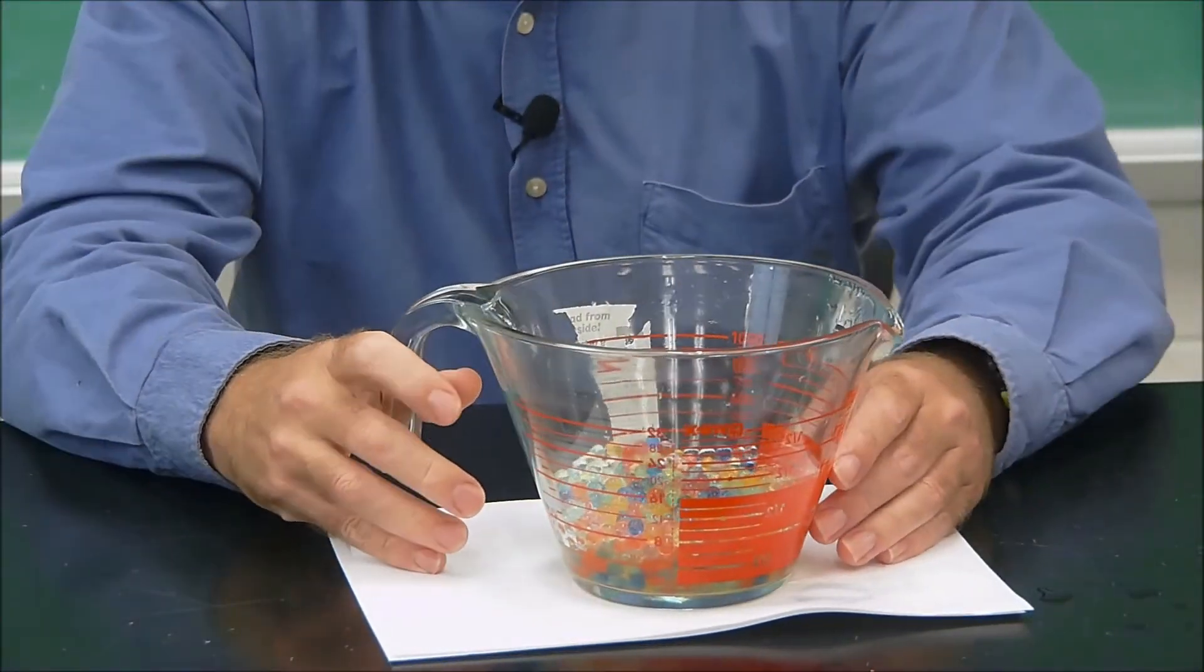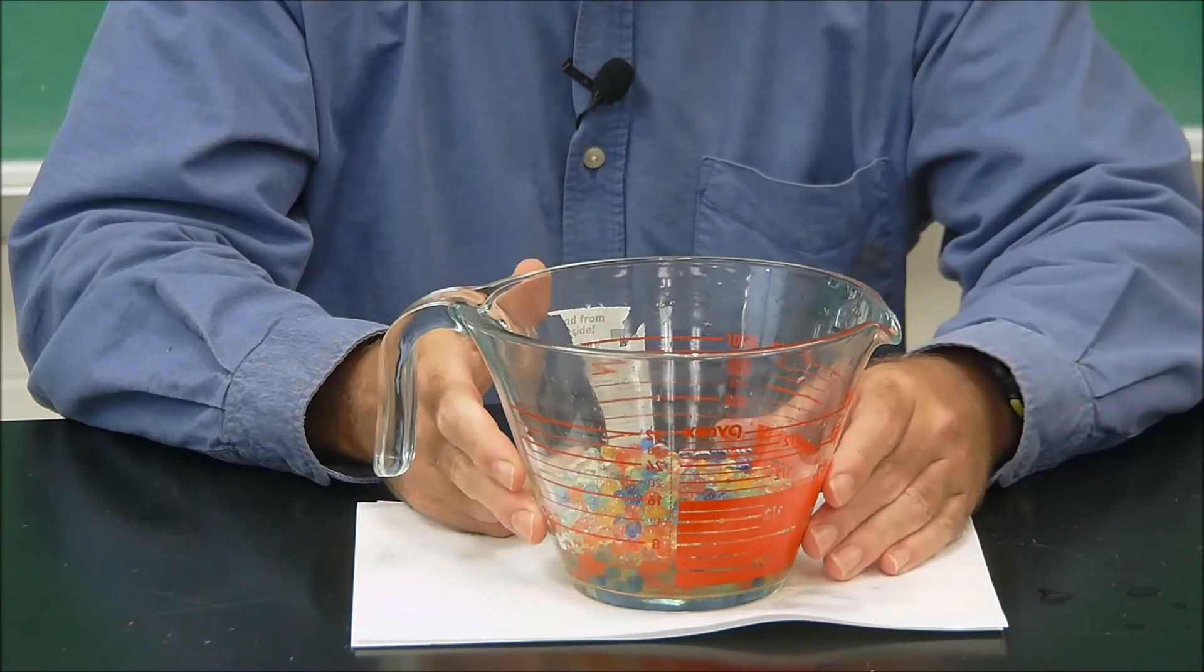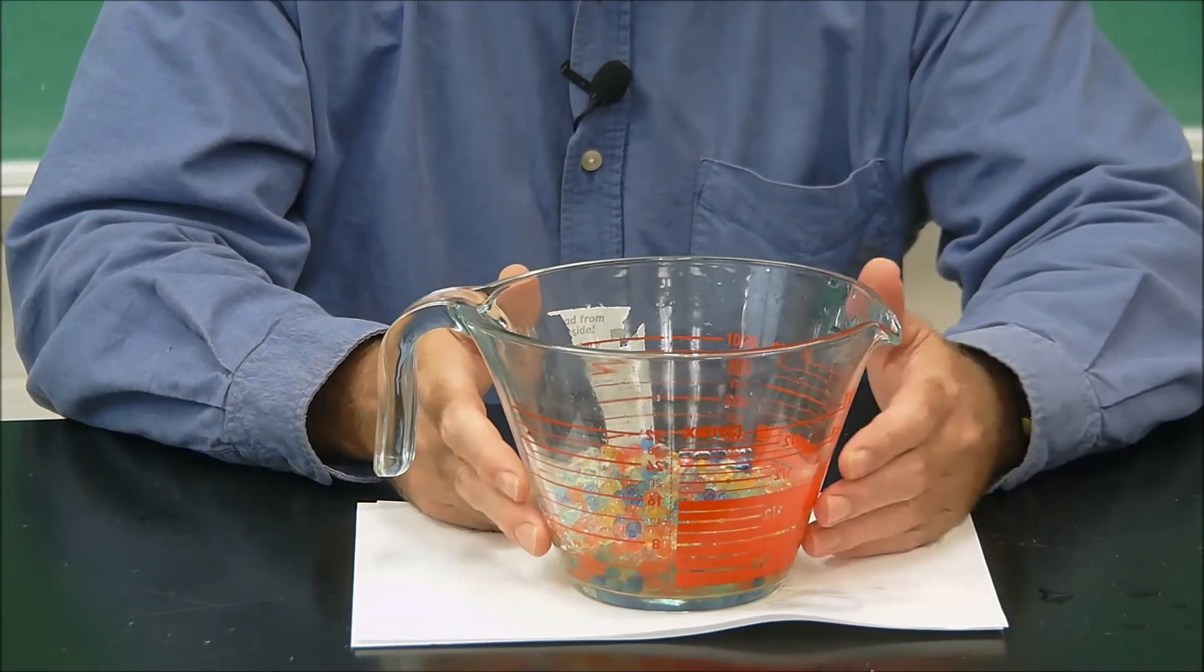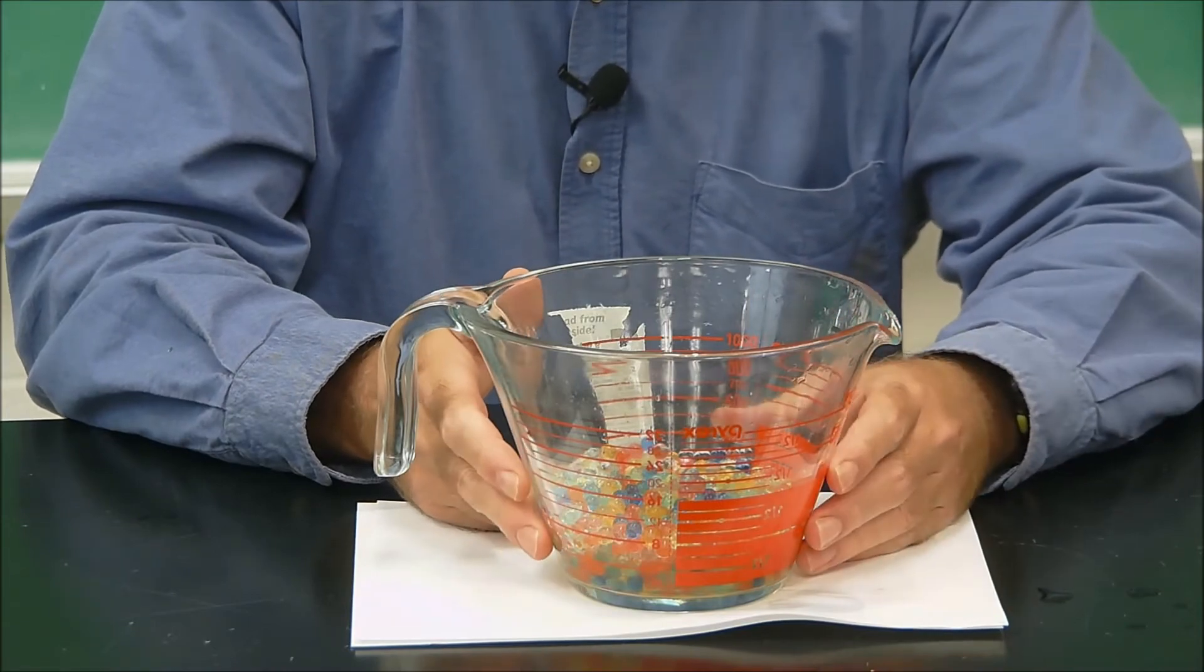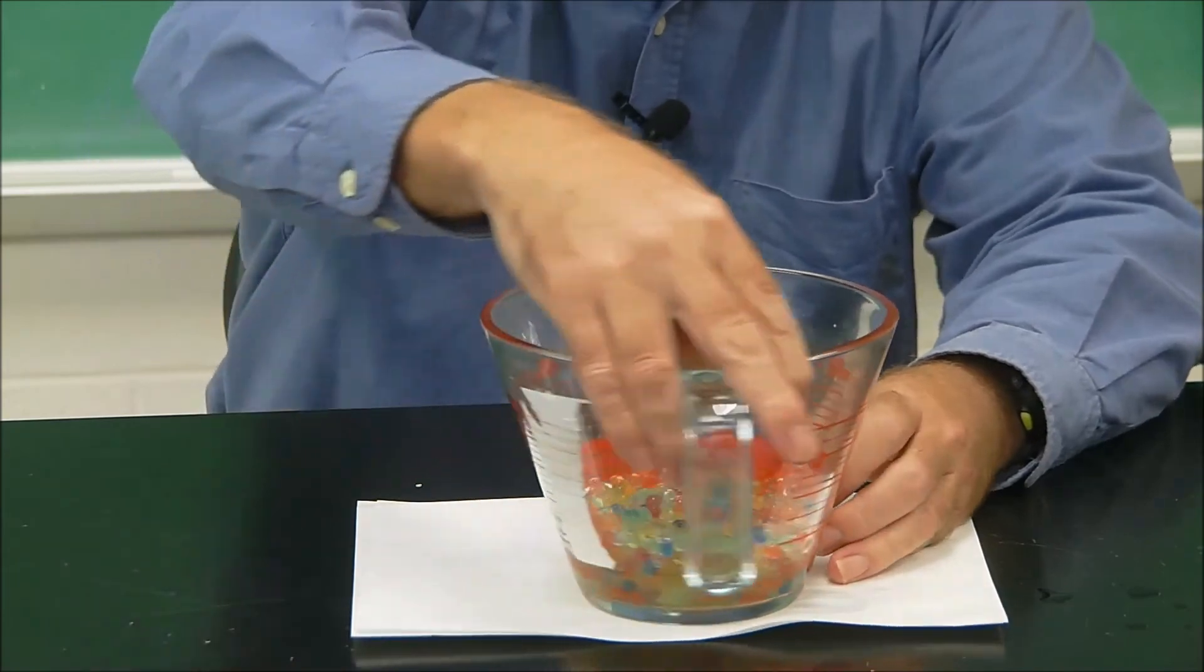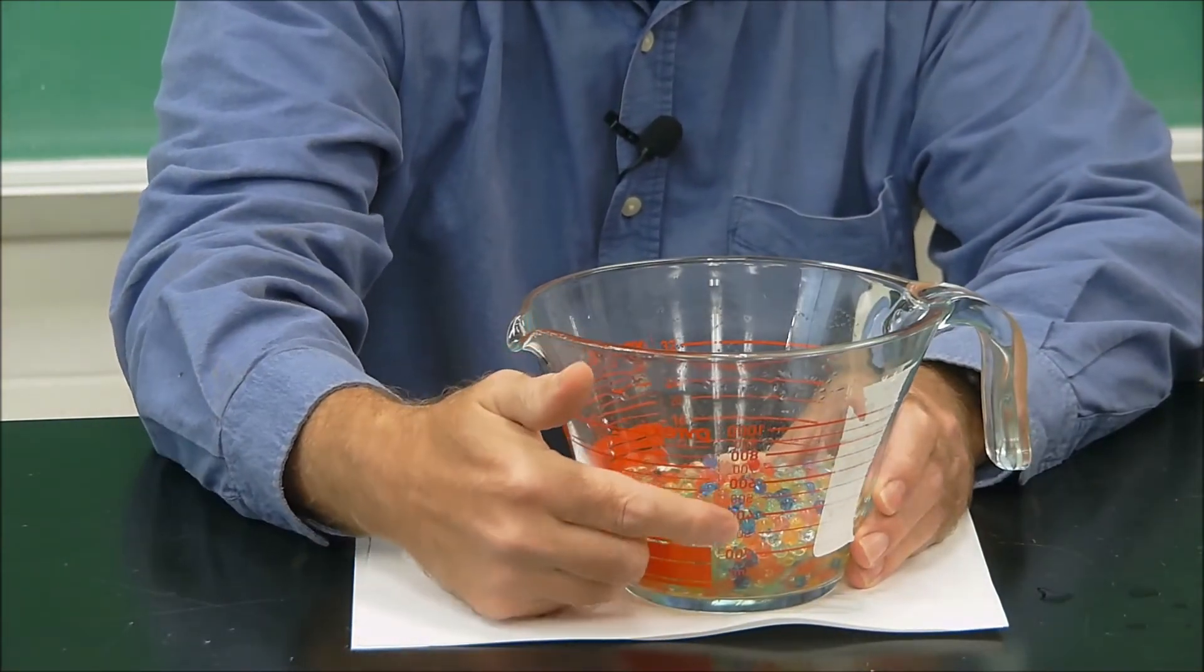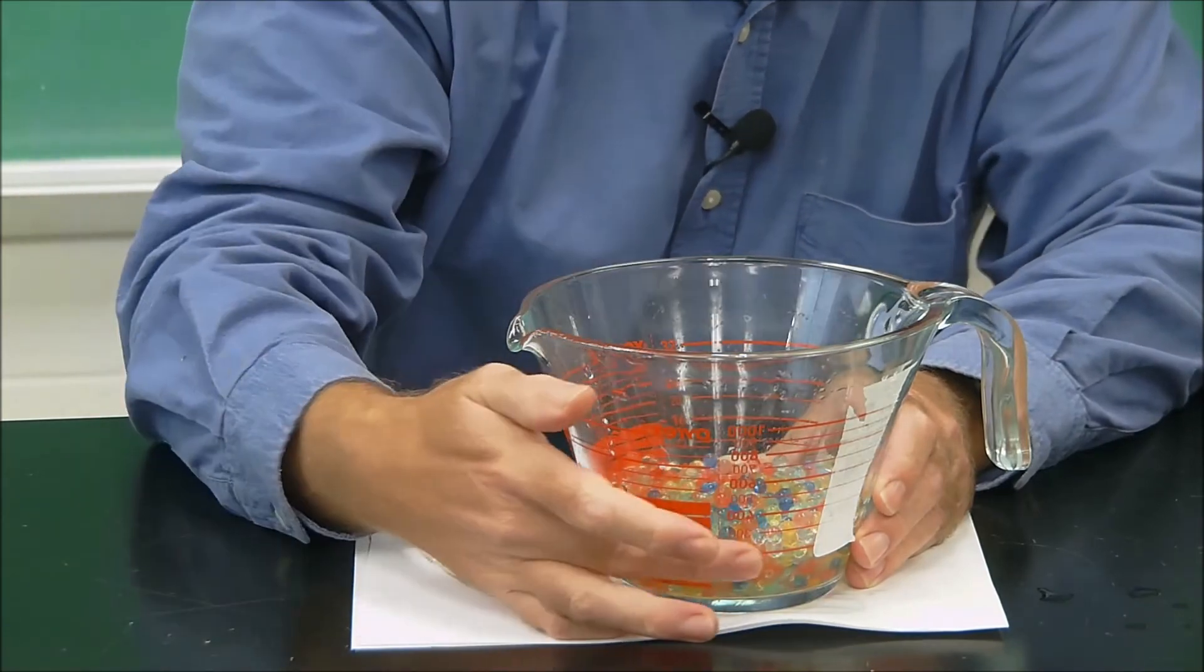All right. What you can see now is that we have a lot less volume made up by those water beads. Initially, they were only about 9 milliliters or 8 milliliters, and then we hydrated them, and they went all the way up to 900 milliliters, which was right about there. But now they're down around the 300 milliliters.